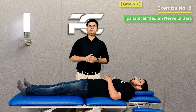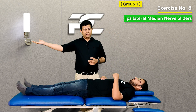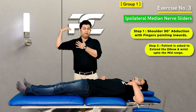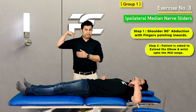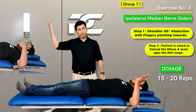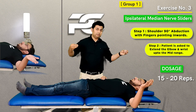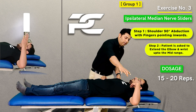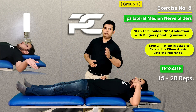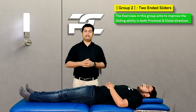The third and final exercise in the distal slider group is the ipsilateral median nerve slider exercise. The therapist instructs the patient to keep the shoulder in 90 degrees of abduction and fingers pointing and touching the shoulder. From here, the patient extends the wrist and fingers and then takes the elbow into the mid-range of extension before returning back. The intention is not to put tension over the neural contents of the median nerve but just to slide the content distally from the cervical spine towards the upper limb.